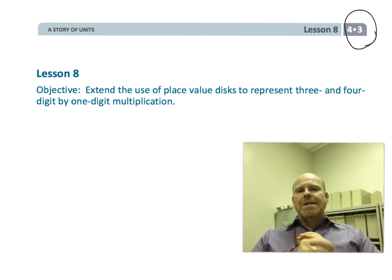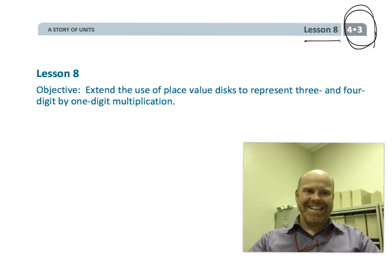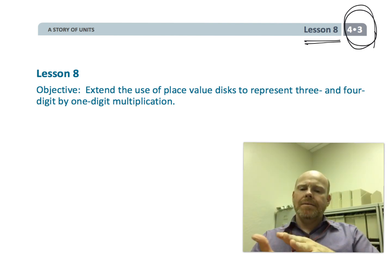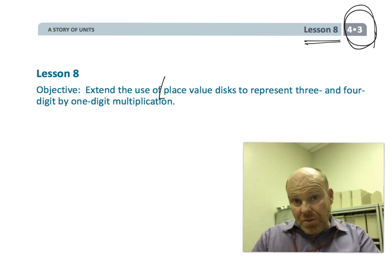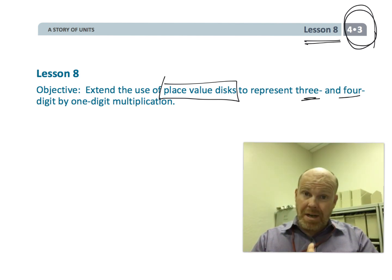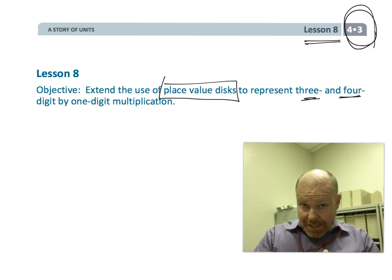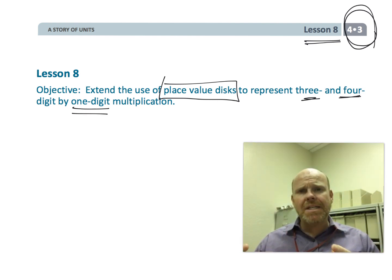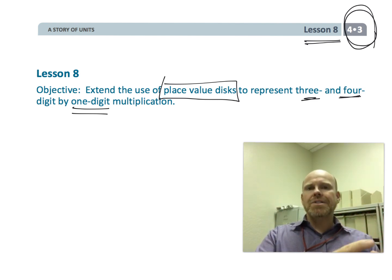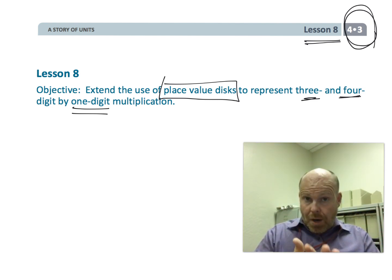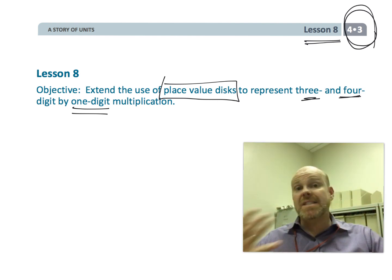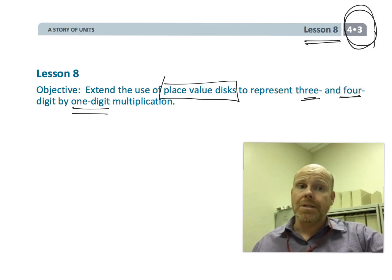This is fourth grade module 3 lesson 8. In this lesson we're going to continue the technique of using the place value chart to multiply, but now we're going to be multiplying three and four digit numbers by one digit. We're still going to be using place value as a tool for understanding partial products, which is one step towards the standard algorithm that our students are going to be learning.